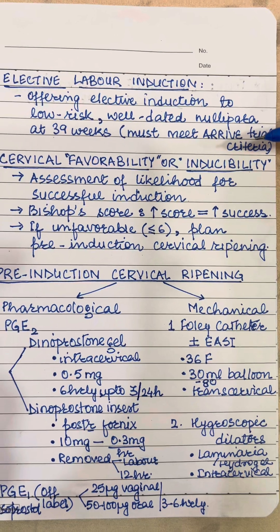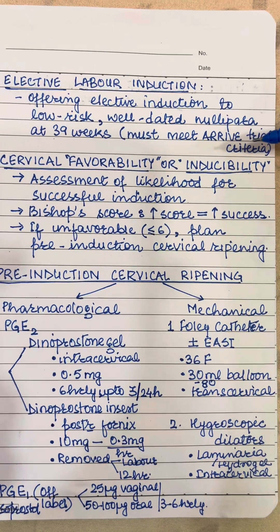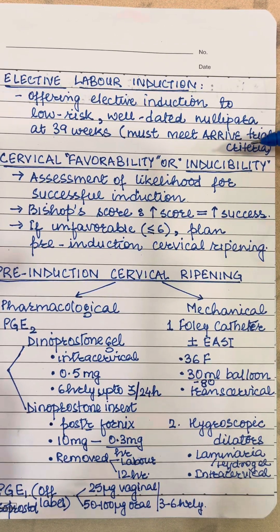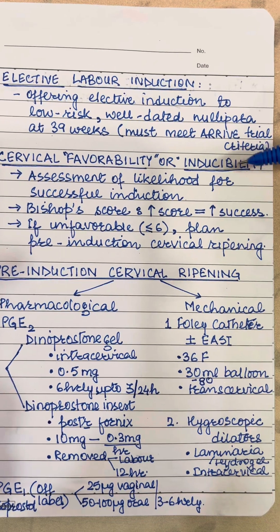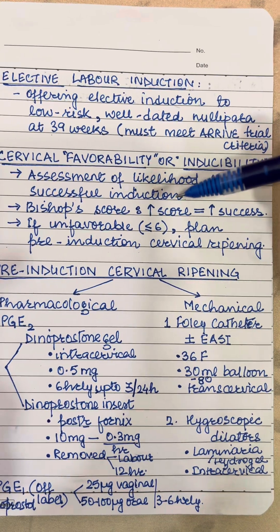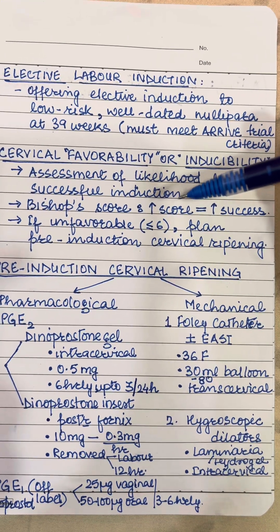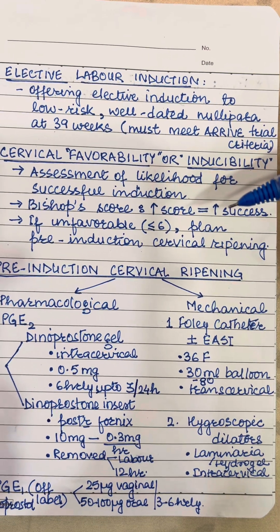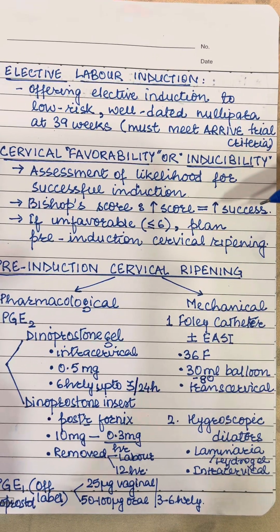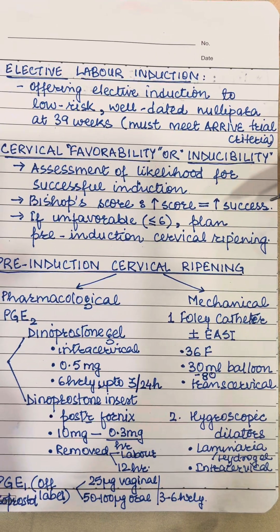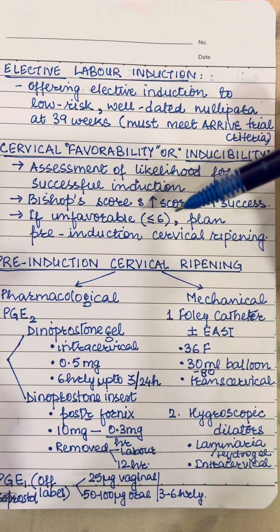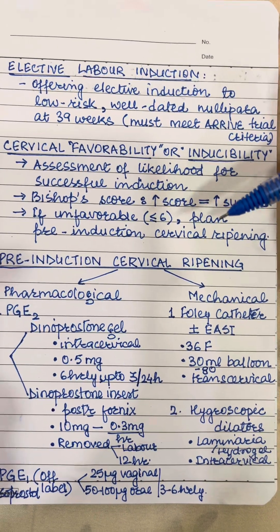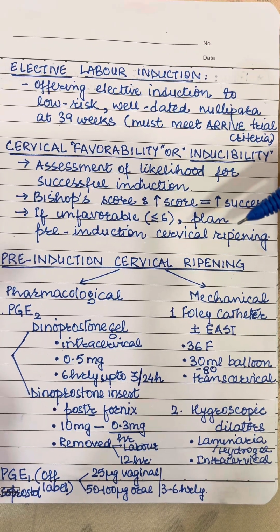Once decided on induction of labor, we have to assess the favorability or inducibility of the cervix for the likelihood of successful induction. This is done by Bishop score. If it's a high or favorable score, it means increased chances of success and we can directly proceed with induction. For unfavorable scores, we should plan pre-induction cervical ripening.